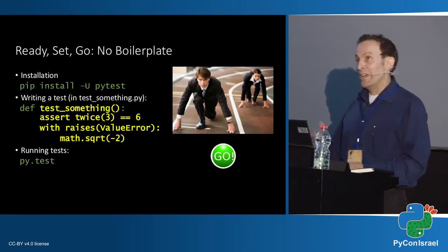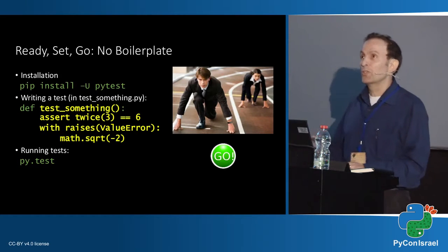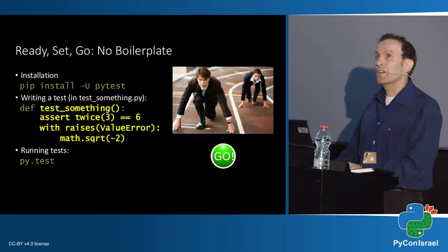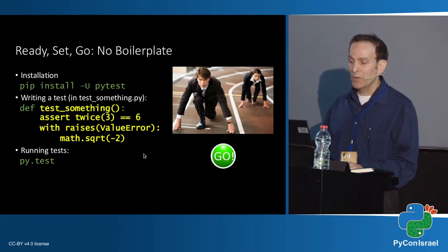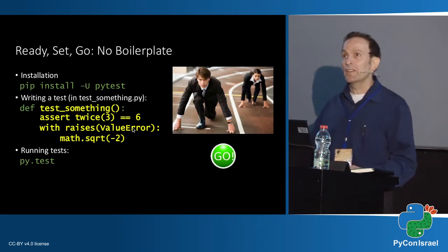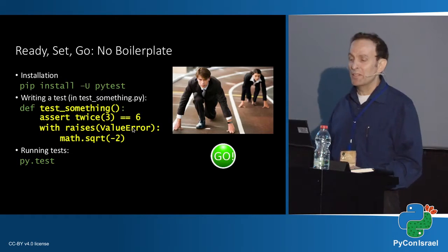There is 'raises', imported from the PyTest package. All we have to do is say that this function — in this case, square root — will raise a ValueError. If it really raises a ValueError, the test passes fine. If not, we get an exception saying that math.sqrt should have raised a ValueError and it didn't, or it raised another exception. These are the two tools we need, and basically we can do all the tests in UnitTest and much more using PyTest.